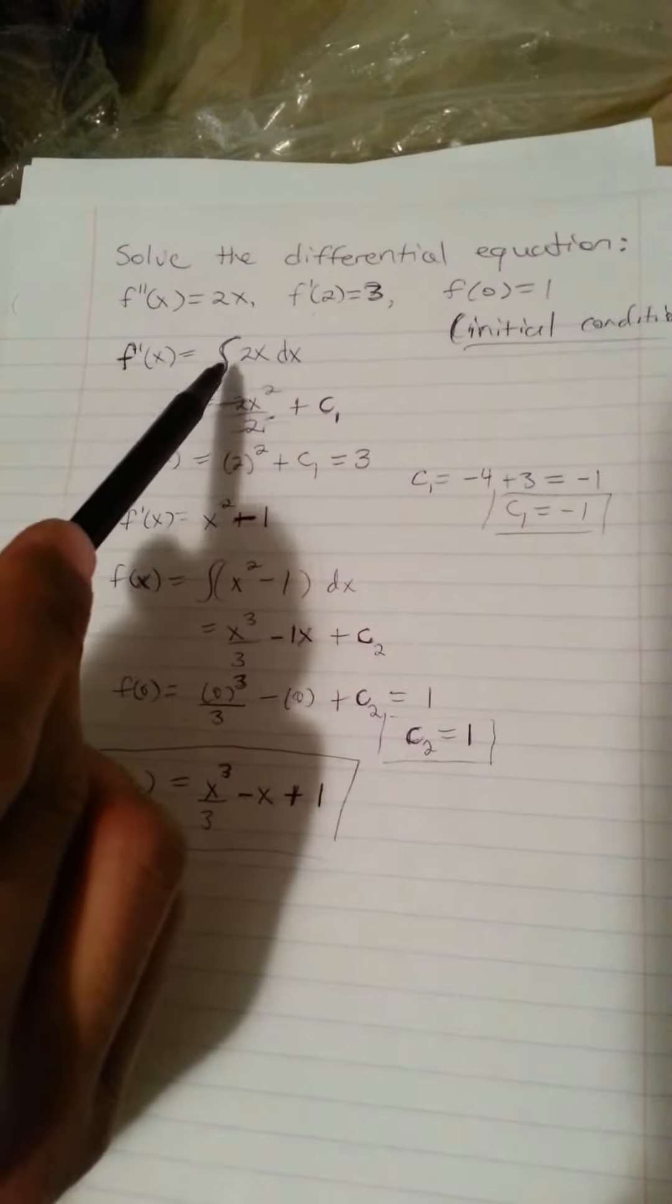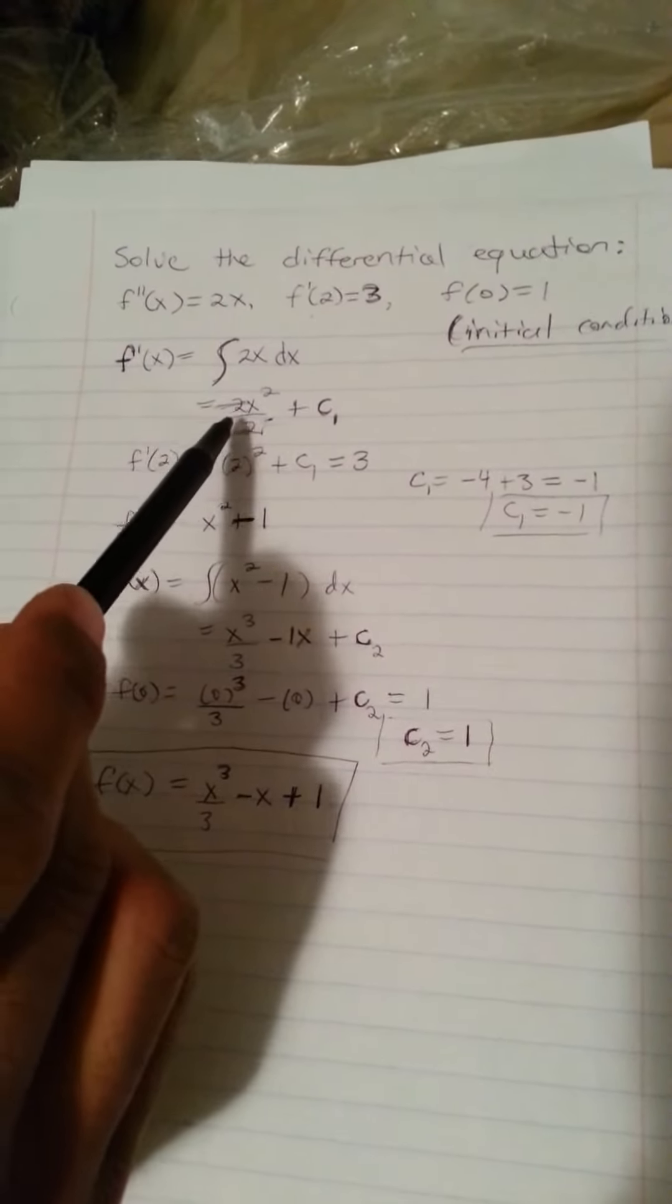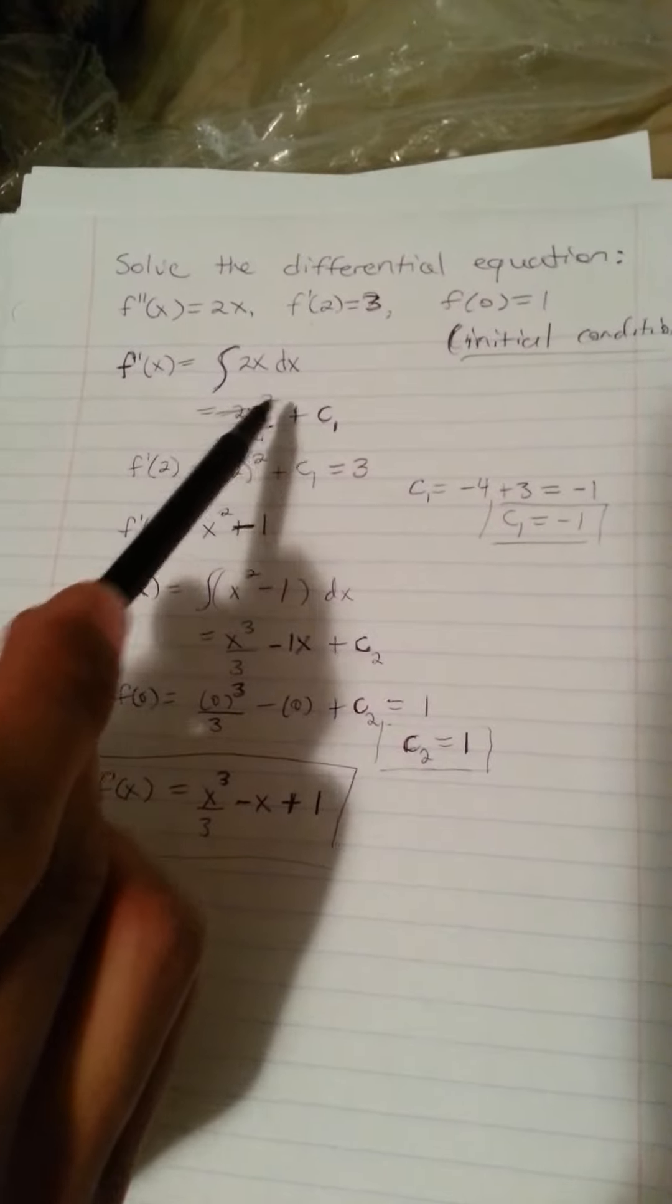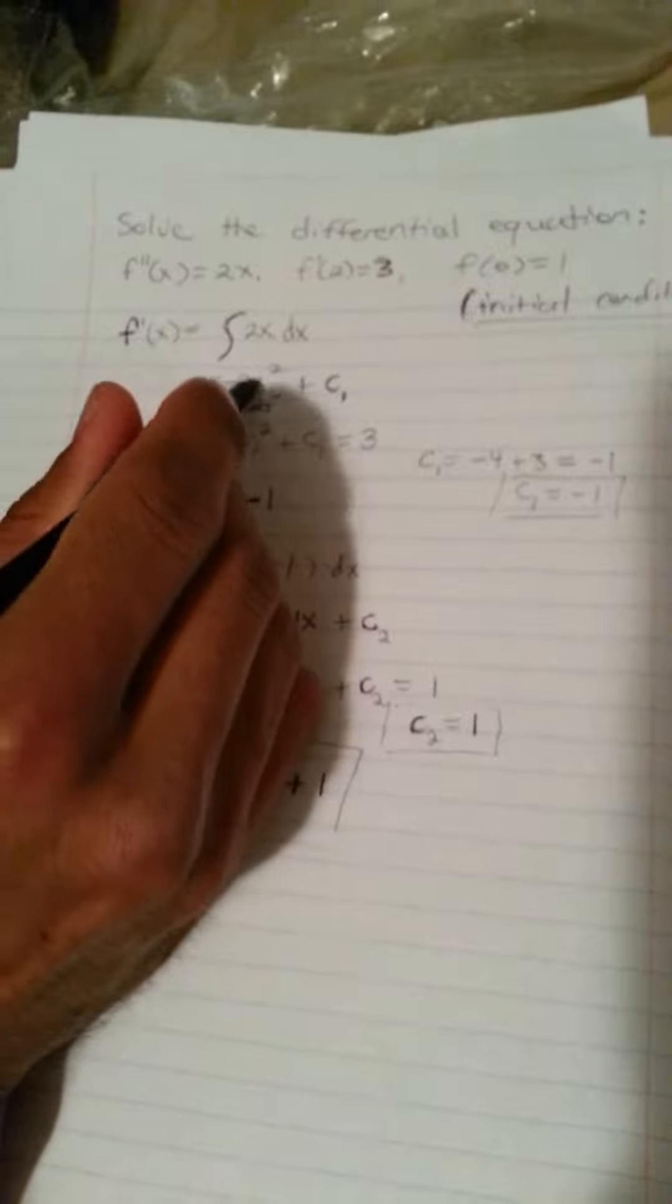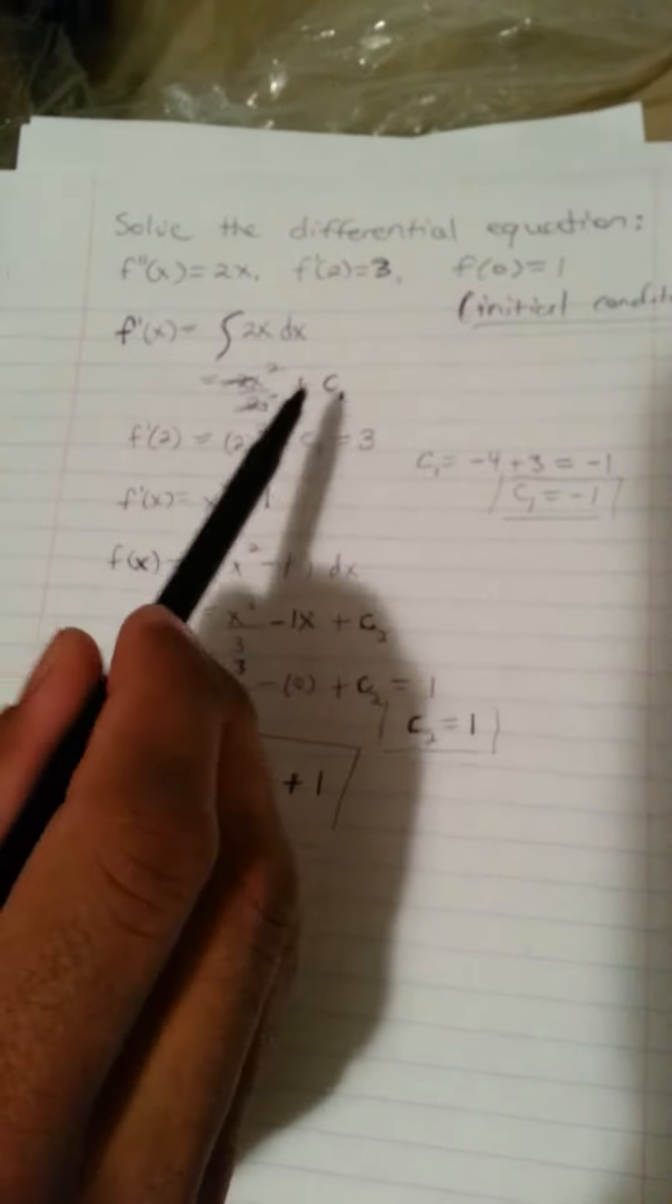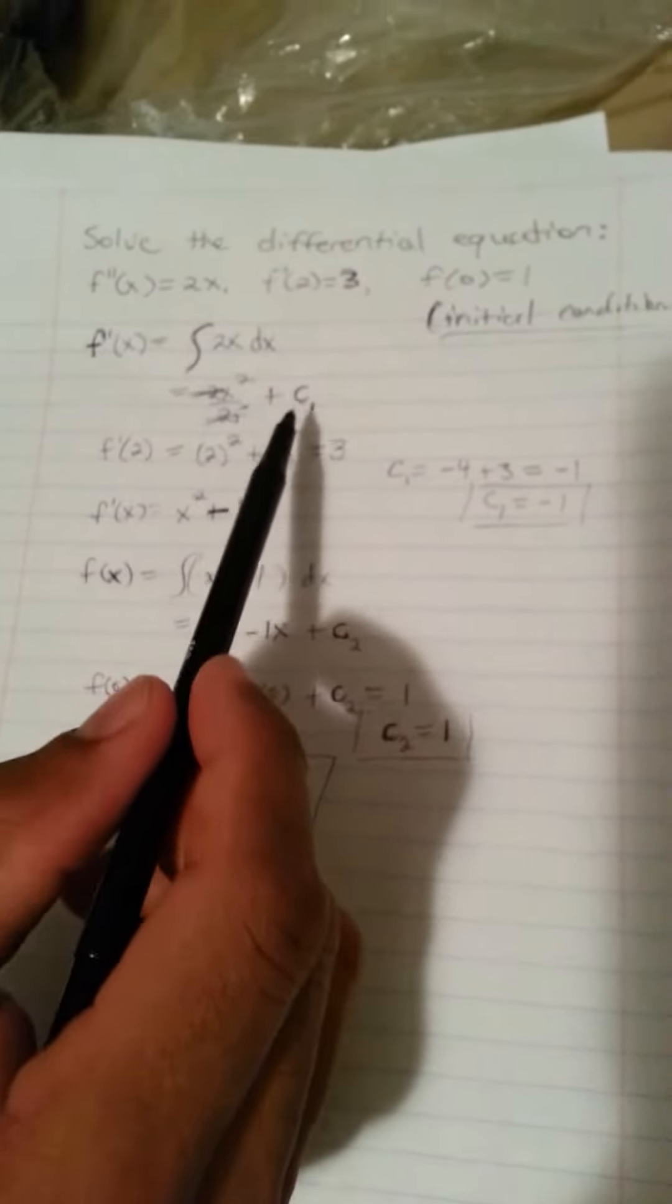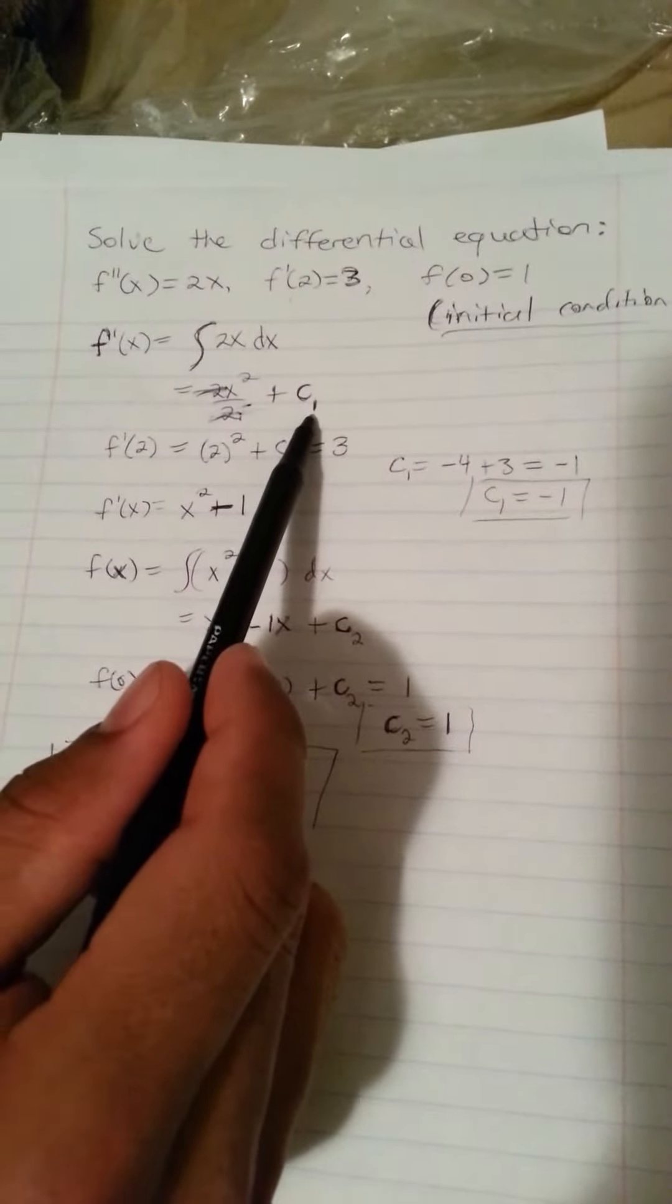So I integrate this with respect to x, and I end up with 2x squared over 2. The 2's cancel out, so I don't have to worry about those. And then I always have to add a constant, and I will label this c sub 1.